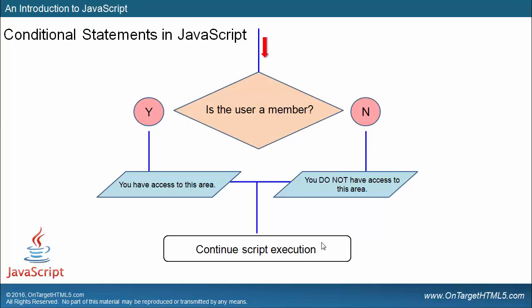You have your code coming in to some type of decision point: 'Is the user a member?' There are two different answers — yes or no. If yes, you have access to this particular area of the website. If no, you do not have access. Certain things will occur based on how that condition is met or not met, and then we continue with the standard flow of the code.